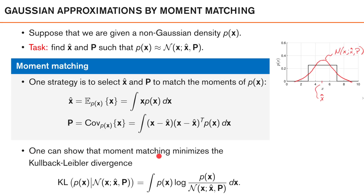If you think the moment matching principle seems a bit arbitrary, there is a theoretical argument in its favor. Namely, one can show that moment matching minimizes the Kullback-Leibler divergence. If you are not familiar with the Kullback-Leibler divergence, you do not need to learn it for this course. In this context, it tells us how similar p of x is to our Gaussian approximation — a small divergence means the approximation is good, and a large divergence means it is not. Among all choices of x-hat and P, these are the ones that give the smallest Kullback-Leibler divergence.